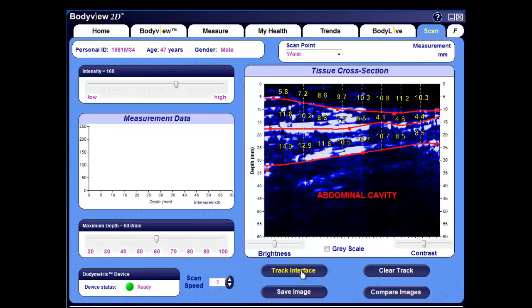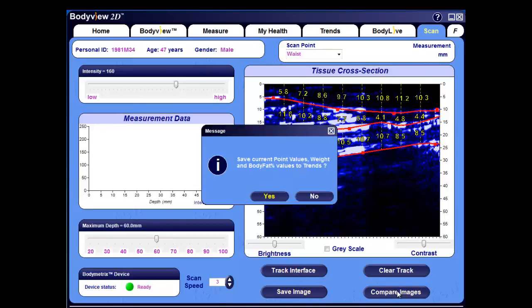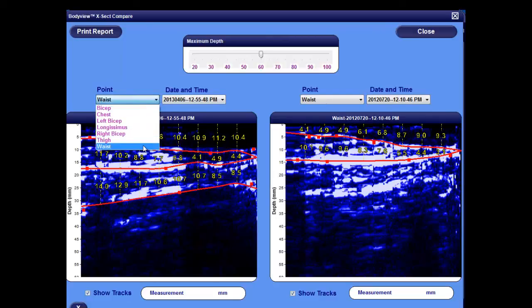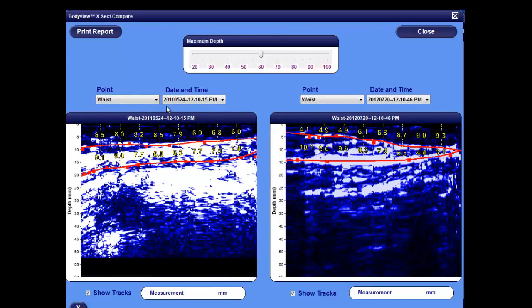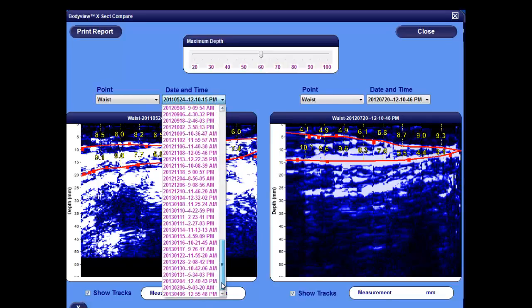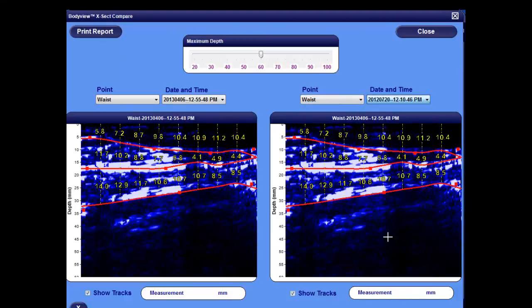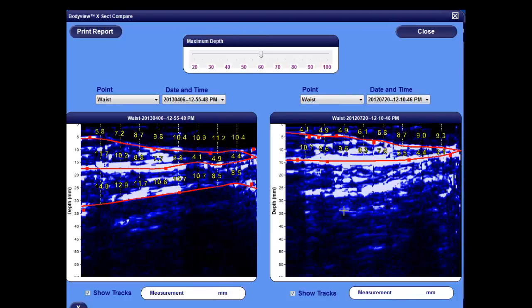You can save the image by selecting the Save Image button, and compare changes in adipose layers by selecting the Compare Images button. You'll be prompted to save the changes, so be sure to select Yes. From the drop-down menu on the left, you can select the waist scan point, and then select the date and time of the image that you're interested in, possibly an initial baseline image of your client's waist. On the right side, select the waist point and the date and time of the scan image you want to compare it with.